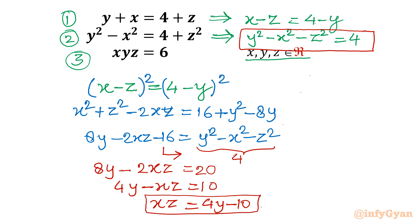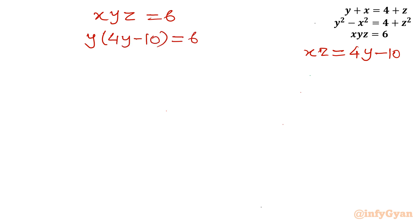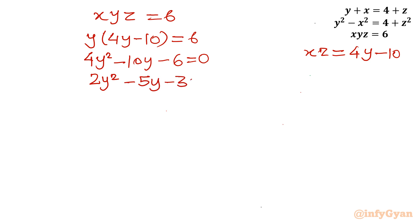This value of xz we will use in equation number 3. Equation 3 is xyz equals 6, and we just calculated xz equals 4y minus 10. Applying this: y times (4y minus 10) equals 6. Expanding: 4y squared minus 10y minus 6 equals 0. Dividing by 2: 2y squared minus 5y minus 3 equals 0.